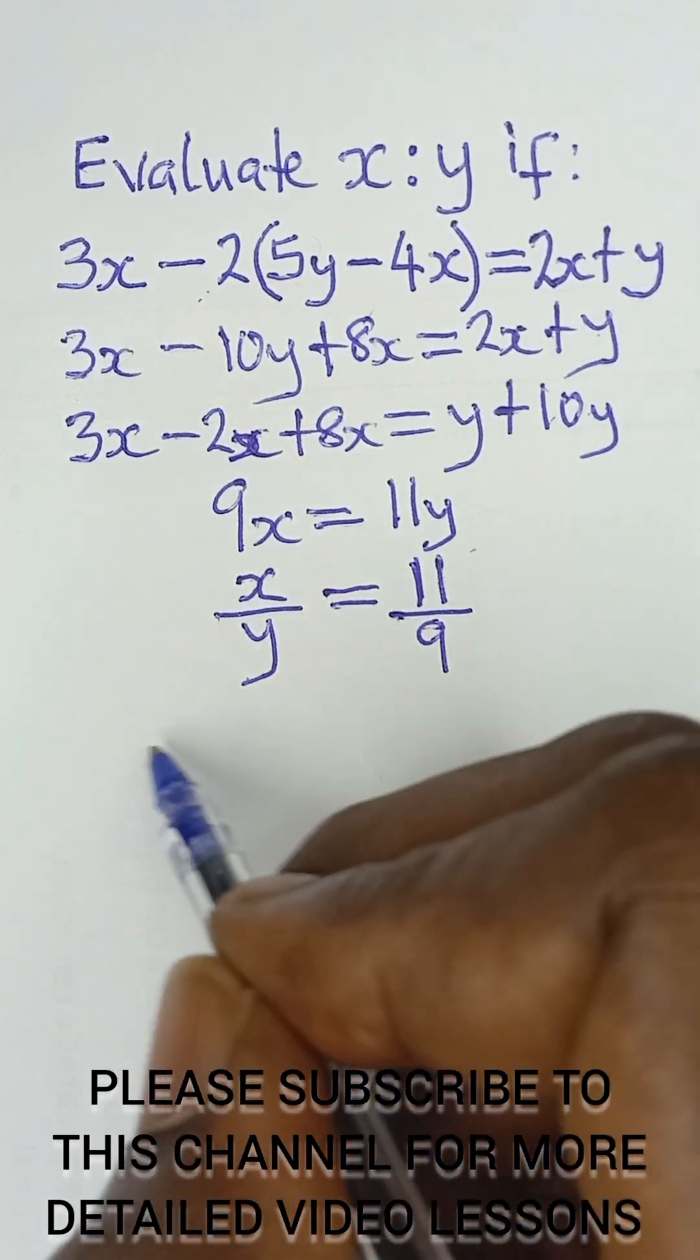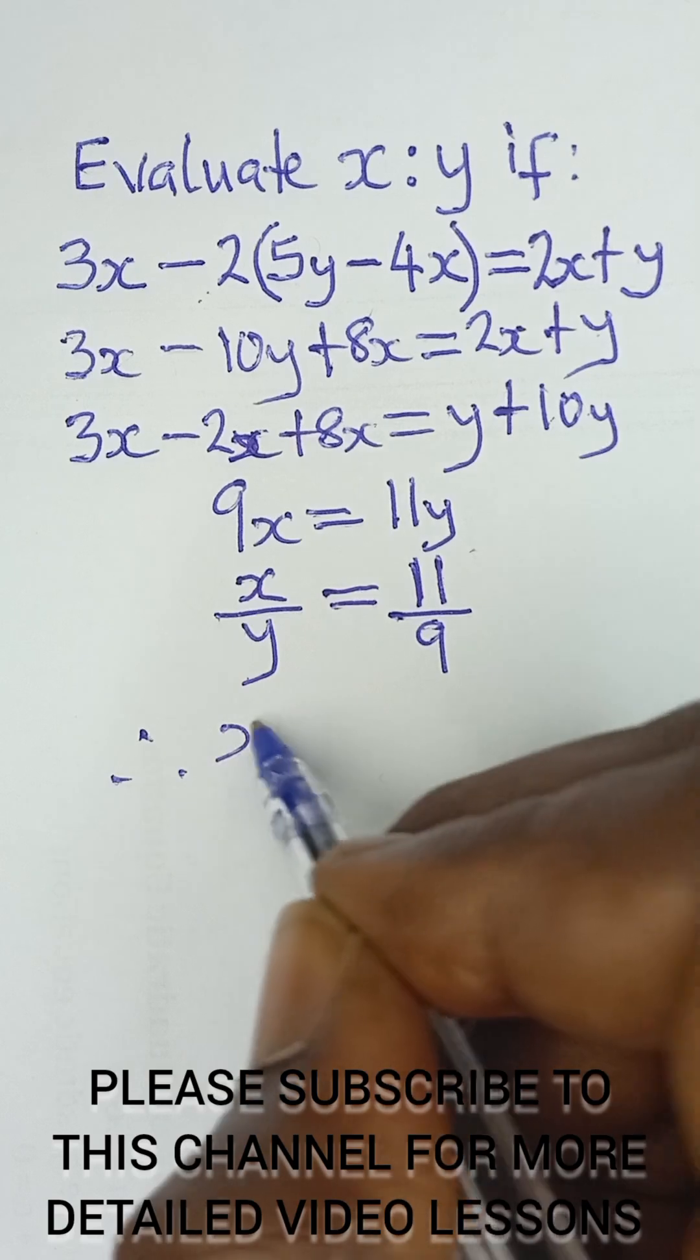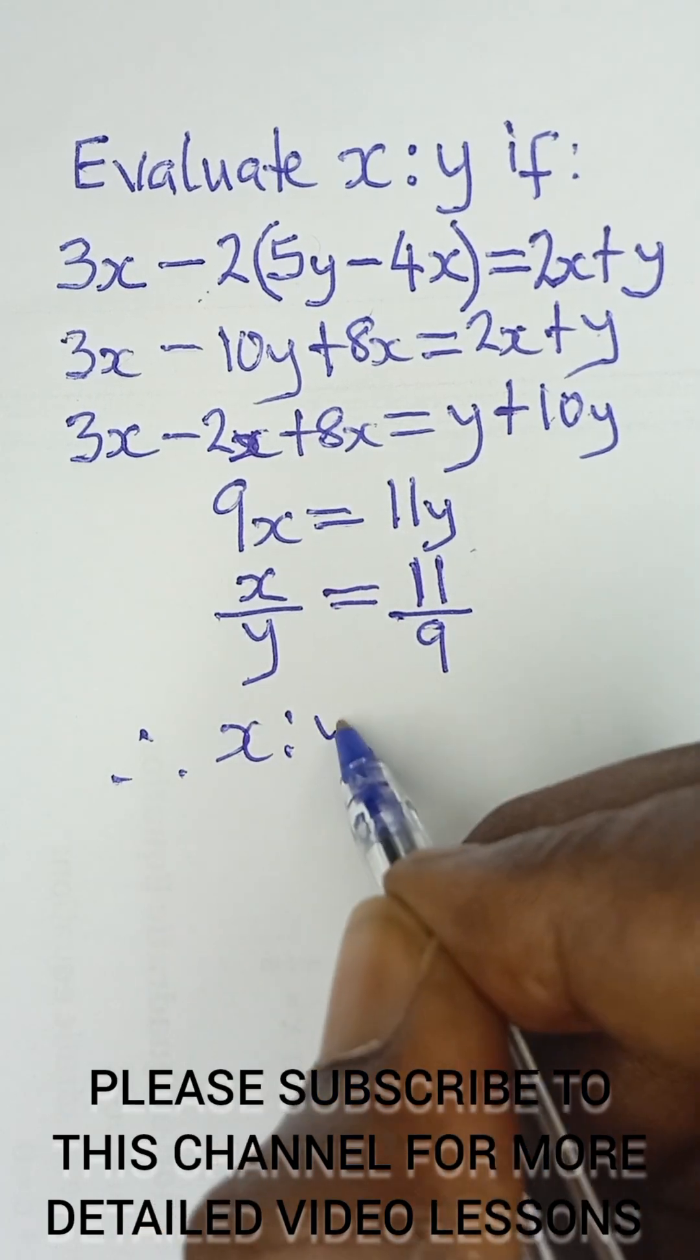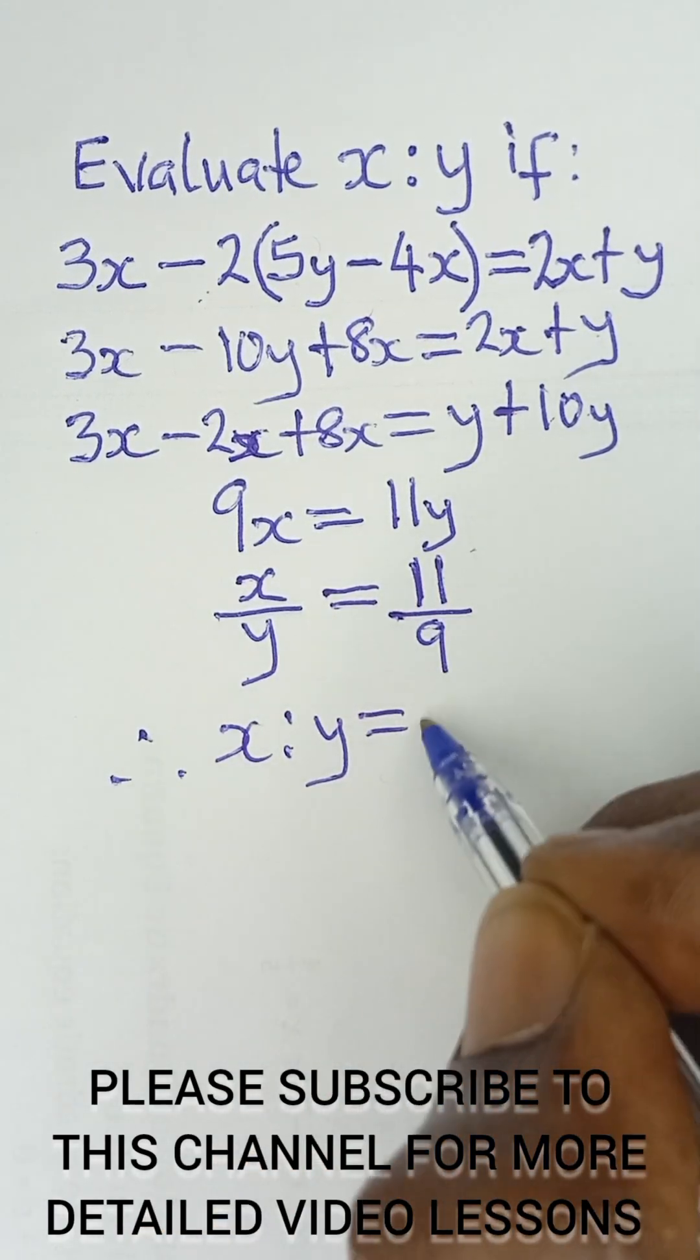So finally I can say x ratio y is equal to 11 ratio 9 as the final answer.